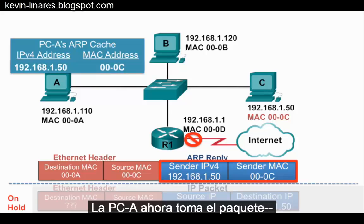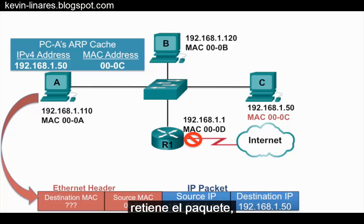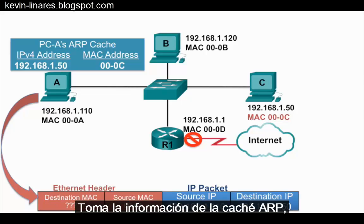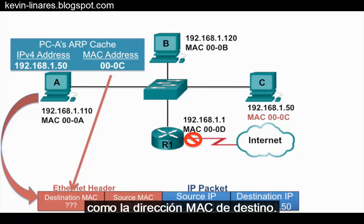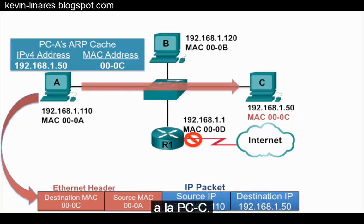PCA can now take the original packet destined for PCC, take that packet off hold, and has the information it needs to send that packet to PCC. It takes the MAC address from the ARP cache and adds that to the Ethernet header as the destination MAC address. PCA can now forward this packet in the proper Ethernet frame onto PCC.